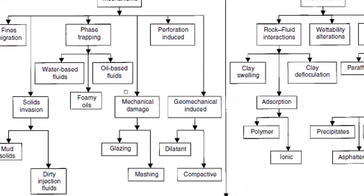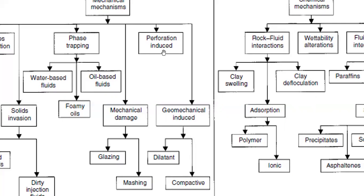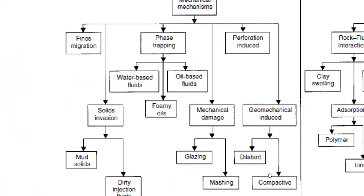From the perforation-induced branch we also have mechanical damage, which includes glazing and meshing. We also have geomechanical-induced mechanisms, which can be dilatant or compactive. The compressive force and compaction of the rock can in turn cause deformation damage.